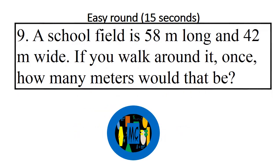Question 9: A school field is 58 meters long and 42 meters wide. If you walk around it once, how many meters would that be? Go!